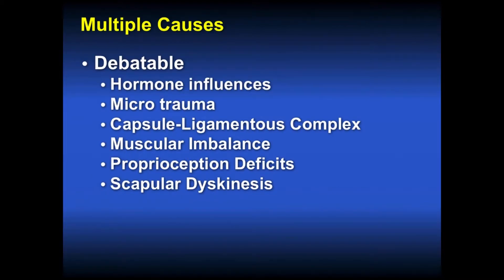There are multiple — and some debatable — causes of multidirectional instability. Multifactorial reasons include hormonal influences, microtrauma, capsuloligamentous complex issues, muscular imbalance, proprioceptive deficits, and scapular dyskinesis, which can all weave together to create this problem patient with multidirectional instability.